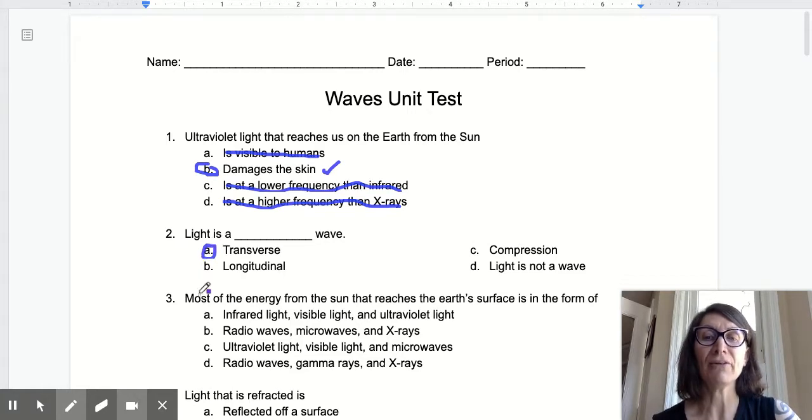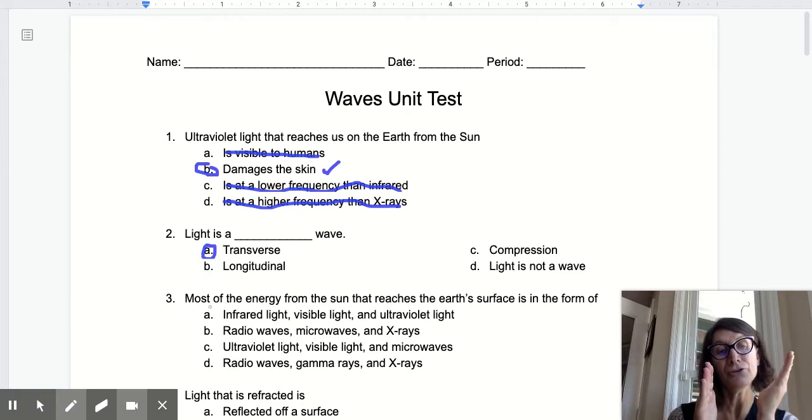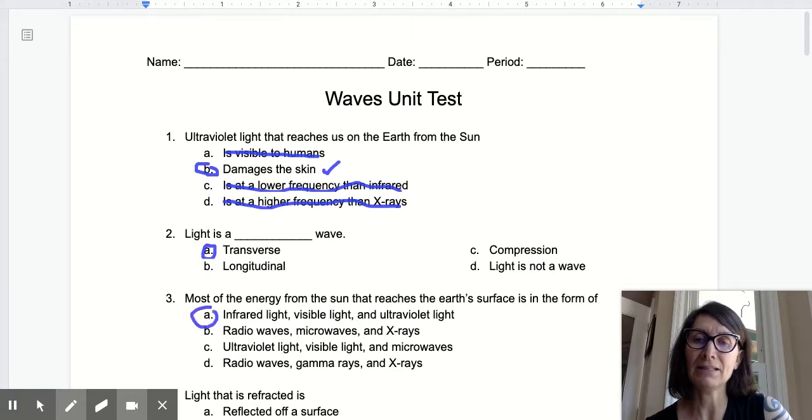Most of the energy from the Sun that reaches the Earth's surface is in the form of A. Infrared, visible, and ultraviolet. Okay, that sounds pretty familiar. Radio waves? The Sun doesn't transmit radio waves. Or at least they don't reach the Earth. Microwaves and x-rays? Ultraviolet, yes. Visible, yes. Microwaves, no. The best choice here really is that visible light spectrum plus the ultra higher frequency violet and the infra lower frequency red. So A is the best choice.